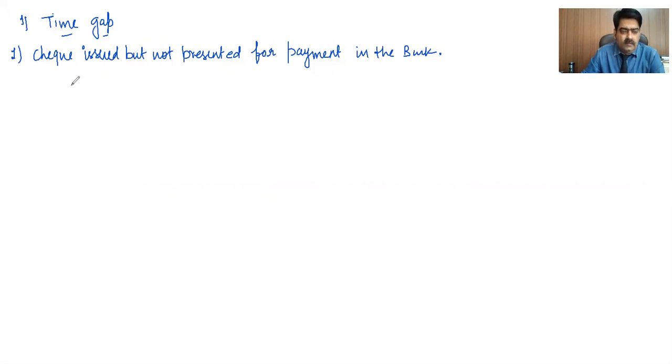Now, for example, on a particular date, cash book balance, as well as passbook balance was 10,000 rupees. Now suppose we have issued a check to Mr. X worth rupees 3000. So our journal entry will be X debit to bank and treatment in cash book will be by X.